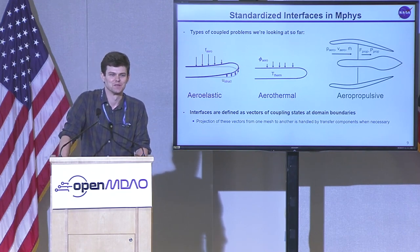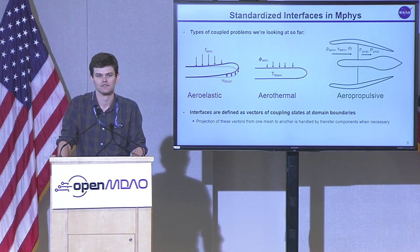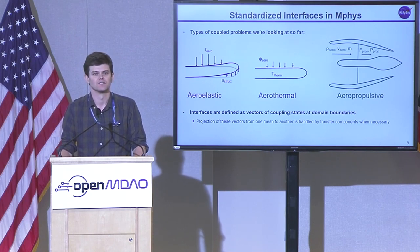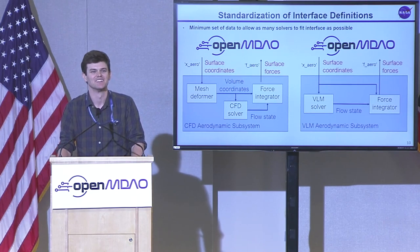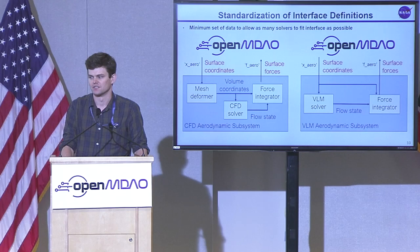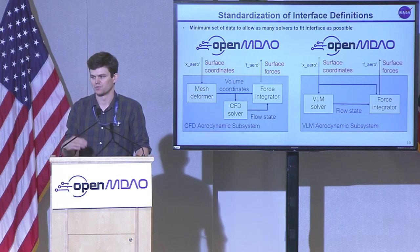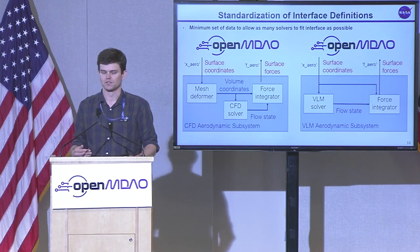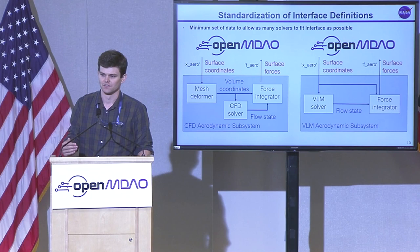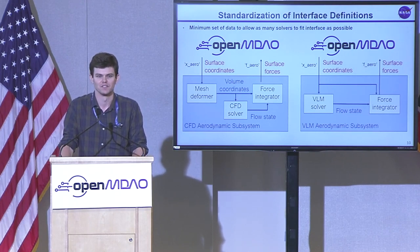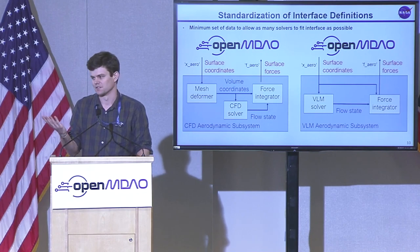This morning we've seen aeropropulsive; I'll show a bit of aerostructural, and Josh will talk about aerothermal tomorrow. We're trying to define our interfaces and agree on what variables are and what to name them. For aerostructural, the inputs to an aerodynamic solver subsystem are the surface coordinates — geometry changes or aeroelastic deflections — and the outputs are the forces back on that surface. For a CFD code, we take surface coordinates, deform the mesh, solve the CFD problem, and integrate the forces. For a vortex lattice code, there's no volume mesh, so you go straight to the flow solver and integrate the forces. As far as the rest of the problem is concerned, it all looks the same.